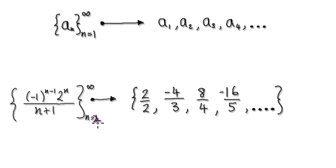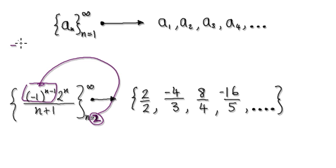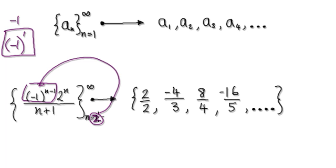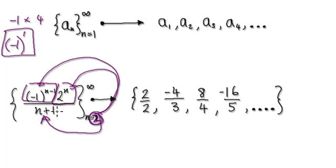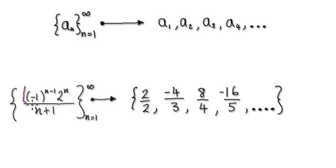The next term: you increase n by 1, so n becomes 2. You put 2 into here, and this thing here would be negative 1 to the power of 1, so this is negative 1. Then you put 2 in here — this would be 2 squared, which is 4. Then you put 2 into here, that would be 3. So negative 1 times 4, giving you negative 4 over 3, and so on.